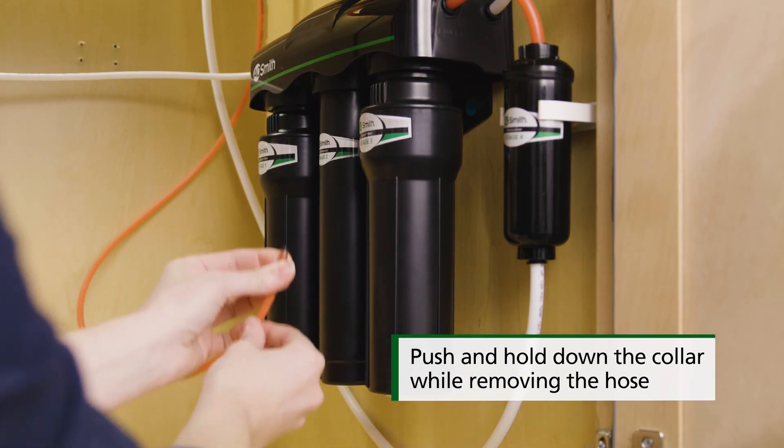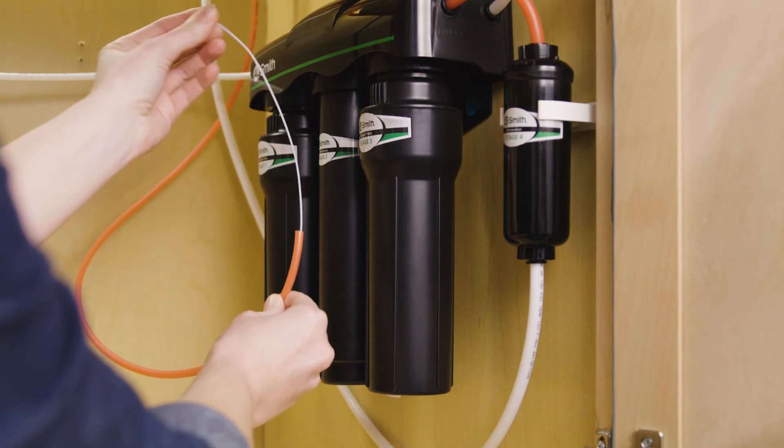Disconnect the 1/4 inch red hose from the drain port. Remove and discard the flow restrictor.